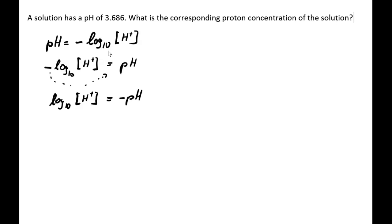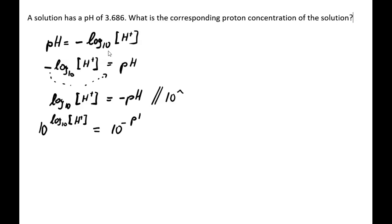Now we can get rid of the log₁₀, because we want the proton concentration itself, not the log₁₀ of it. We apply the inverse mathematical operation, which is 10 to the power of. Taking both sides to the power of 10: on the left we get 10^(log₁₀[H⁺]), and on the right we get 10^(negative pH).